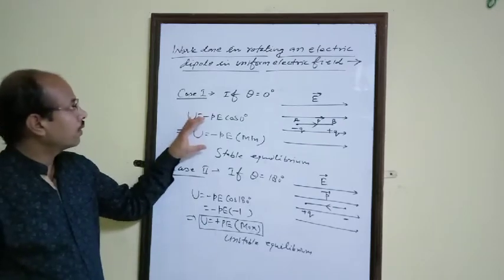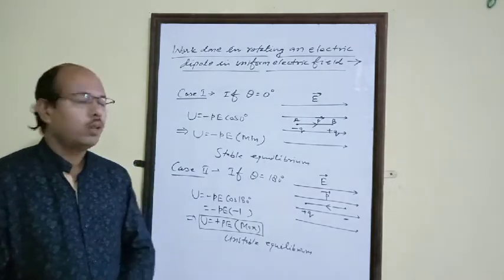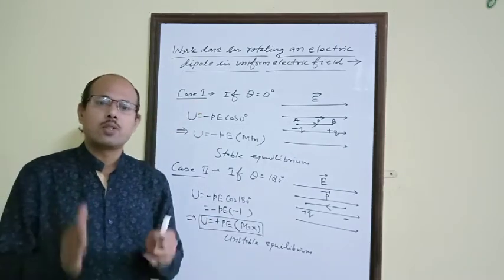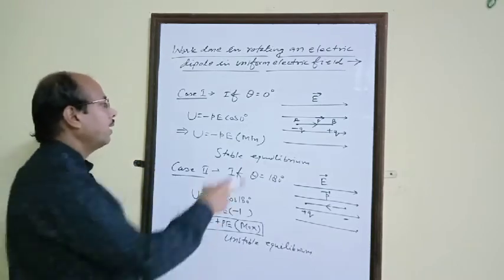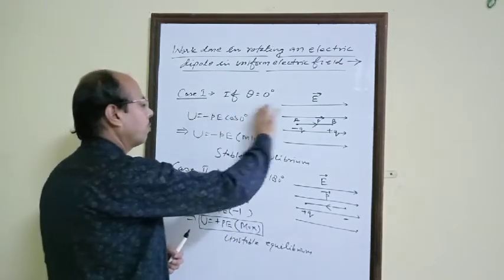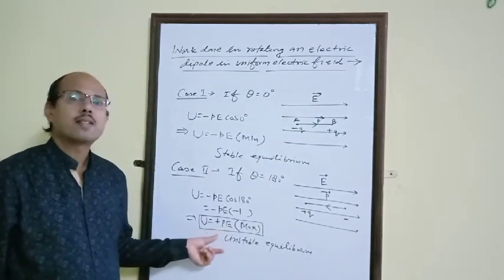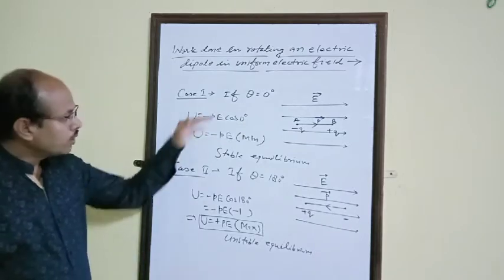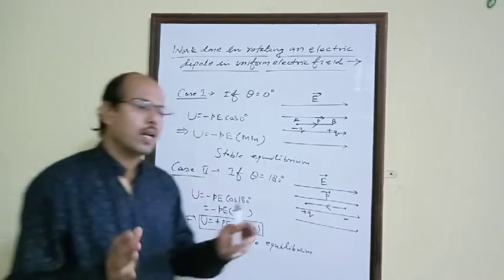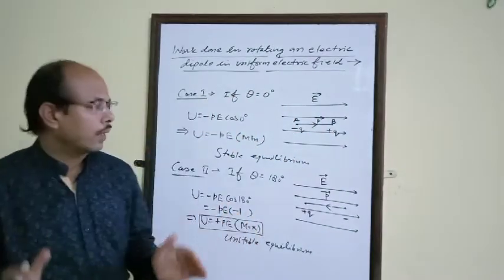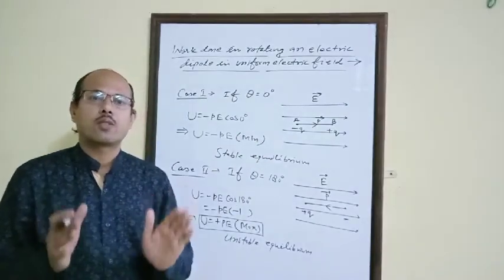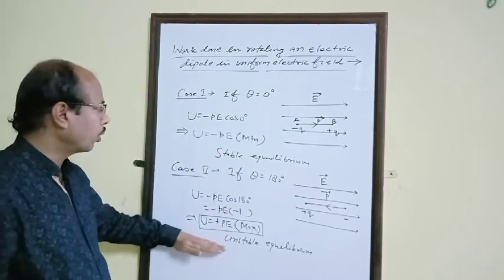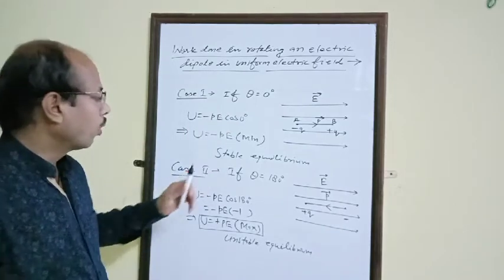So this is the topic of work done in rotating an electric dipole in uniform electric field, and potential energy of dipole in uniform electric field. The expression for potential energy is U equals minus PE cos theta. We discussed two cases: stable equilibrium and unstable equilibrium. A common exam question asks to draw the orientation of electric dipole for stable or unstable equilibrium. Now I am recalling the topic as a revision.